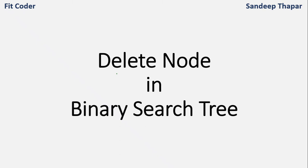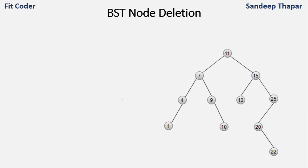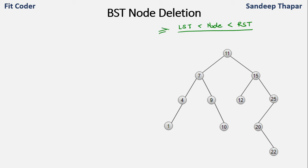In this video we will discuss how we can delete a node in a binary search tree. In a binary tree if a node is deleted then we have to restructure the tree as per the BST properties. The property of the BST is that the left subtree is less than the node and the right subtree is greater than the node. Maintaining this property, we have to delete a node from a BST.